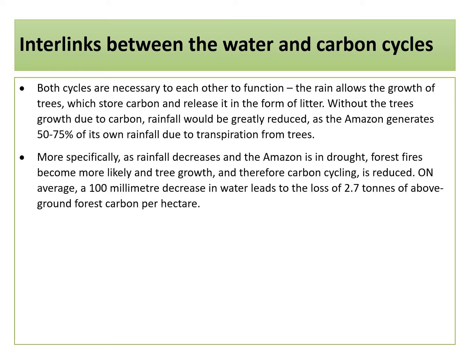Interlinks between the water and carbon cycles. Both cycles are necessary to each other to function. The rain allows the growth of trees, which store carbon and release it in the form of litter. Without tree growth driven by carbon, rainfall would be greatly reduced, as the Amazon generates 50 to 75% of its own rainfall from tree transpiration. More specifically, as rainfall decreases and the Amazon enters drought, forest fires become more likely and tree growth — and so also carbon cycling — is reduced overall. On average, a 100 millimetre decrease in water leads to the loss of 2.7 tonnes of above-ground forest carbon per hectare.